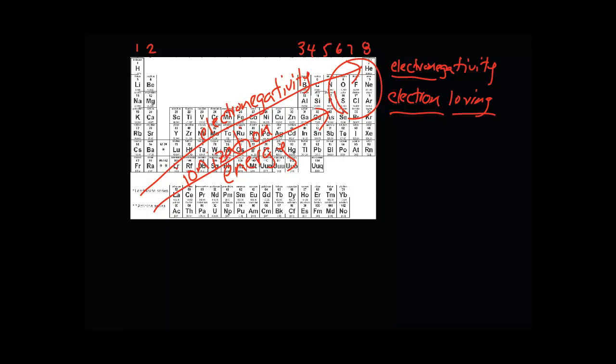This is atomic radius. Fluorine is the smallest type of atom you can get, and atoms towards the bottom left are the largest.